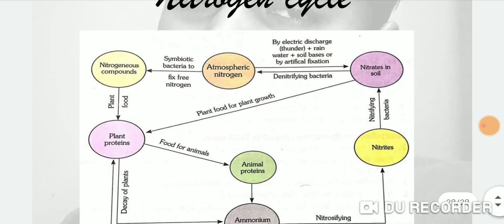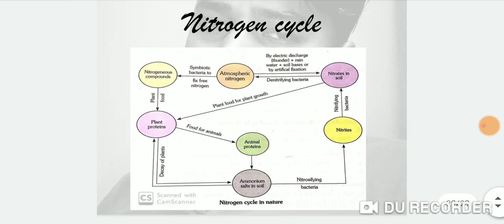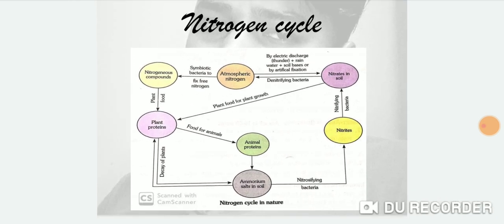Now here is the diagram of the nitrogen cycle — it is important and must be drawn in your copy. As shown in the diagram, atmospheric nitrogen is converted into nitrogenous compounds, which are then used by plants for food, and plant protein formation occurs in this cyclic process. You must draw and practice this diagram.